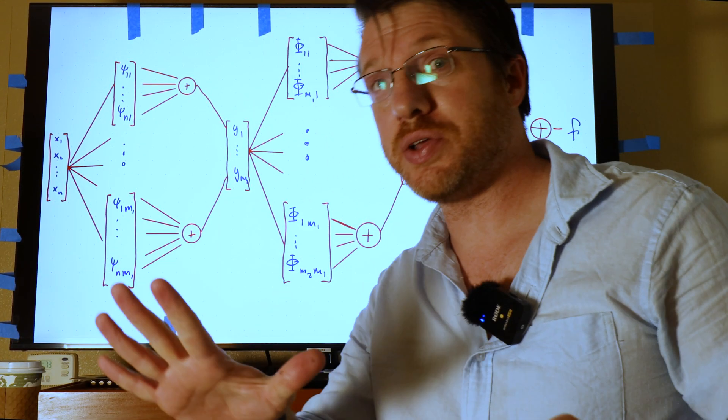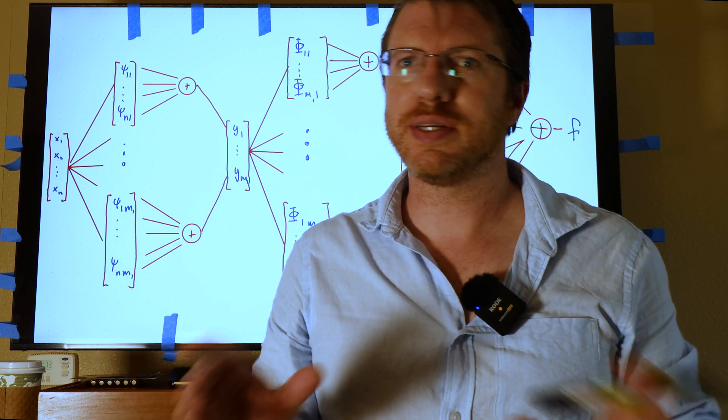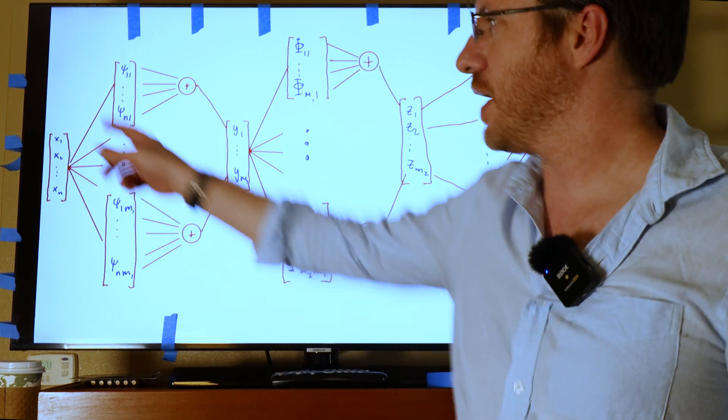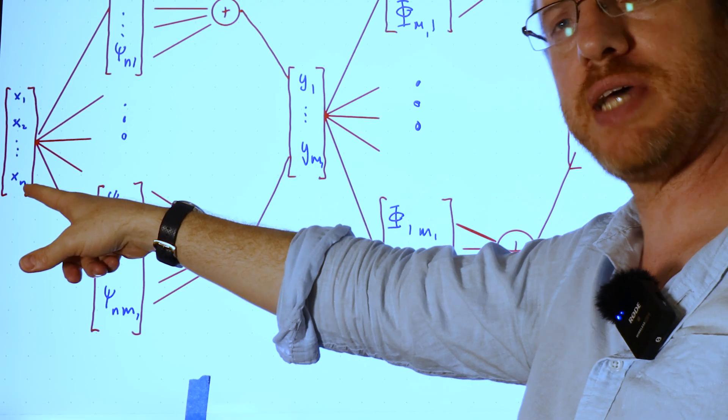Okay, so this is how you can set up a multi-layer KAN network. And so what we're going to do is we start the same way we did before. So we have this x1 through xn, this is our input state that we're putting in. So there's x1, x2, all the way up to xn.